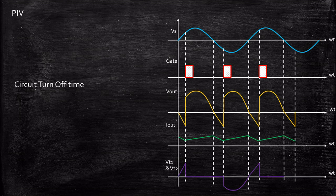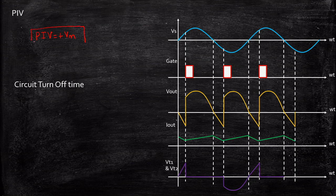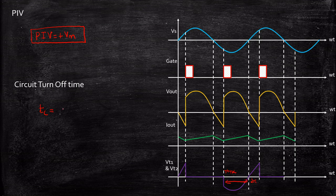Now, what is the peak inverse voltage and circuit turnoff time? The maximum negative voltage appearing across thyristors T1 and T2 is −Vm, so the peak inverse voltage by definition is equal to Vm in magnitude. The circuit turnoff time Tc is the time during which the thyristors are turned off. Observing the waveform, one full cycle is 2π and T1/T2 stop conducting at π + α, so Tc = (2π − (π + α)) / ω = (π − α) / ω.